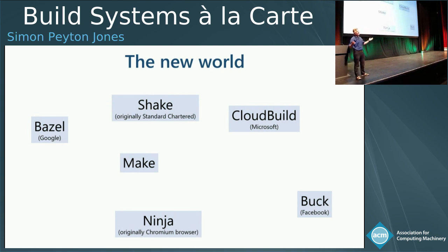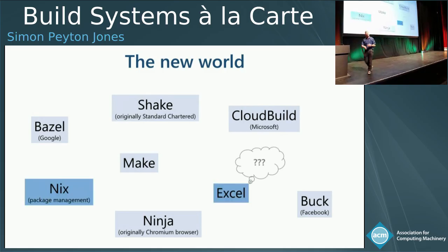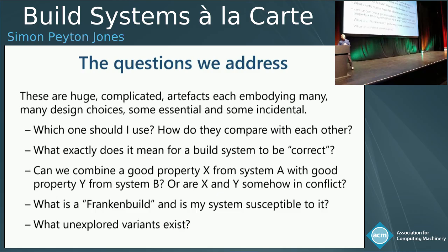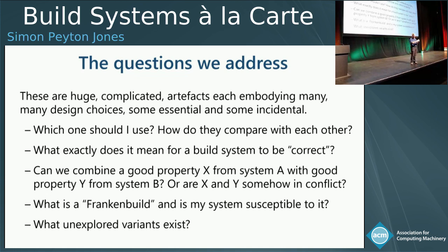The genetic diversity in the build system gene pool has increased quite a bit. And if you look through the right spectacles, what build systems do is also being done by other things like Excel and Nix — there are things to do, dependencies, and you want to rebuild as little as possible. So that genetic diversity leads to questions like: which one should I choose? What exactly does it mean to be correct? Can I combine the good properties of one build system with another, or are those properties in conflict? And maybe there are unexplored variants that just don't exist at all. That's the problem we address in this paper.